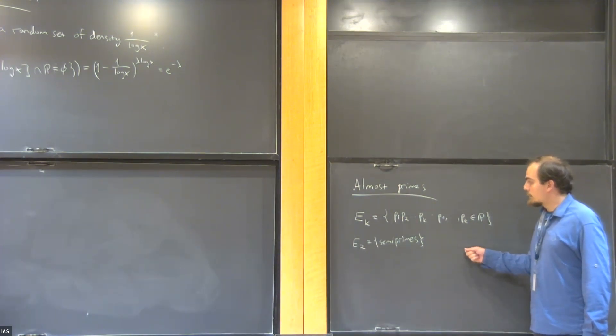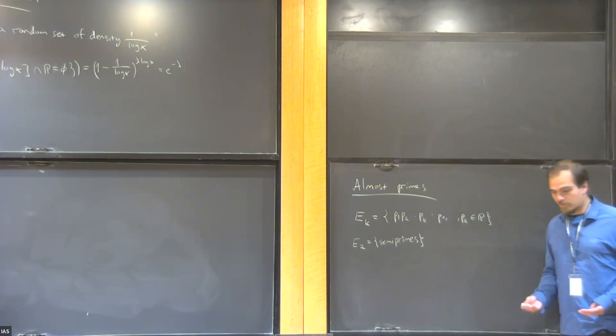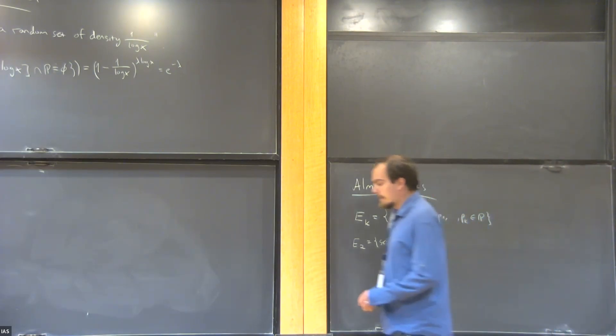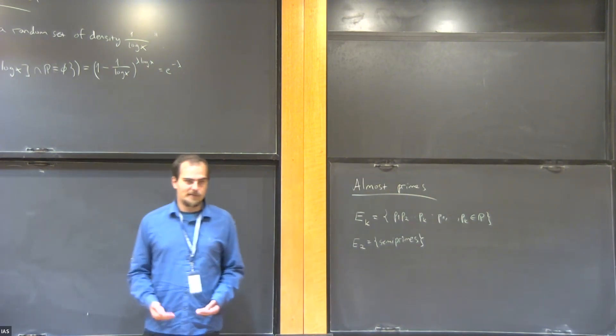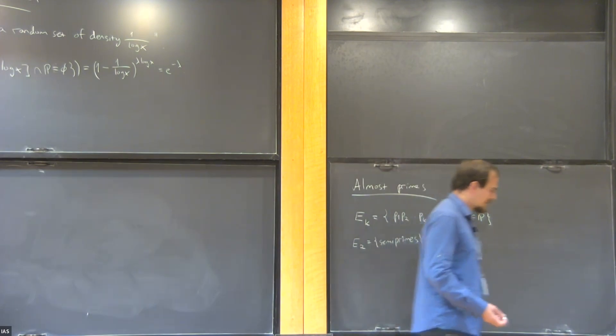Why is it natural to consider almost primes as an approximation to the primes? One thing is that they have a similar density. So the density is, up to log factors, the same as the primes.